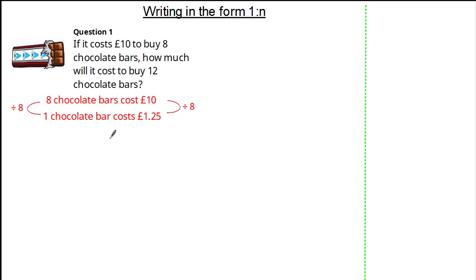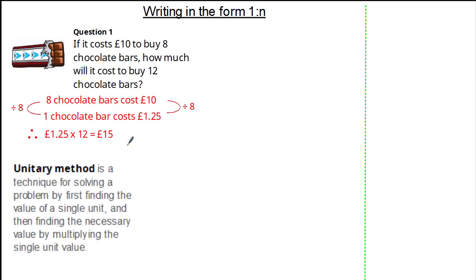Now we know the price of 1 chocolate bar, we can work out the price of 12 chocolate bars. Simply, £1.25 multiplied by 12 gives us £15. This is what's known as the unitary method, and it's a technique used for solving a problem by first finding a single unit, and then multiplying where necessary.